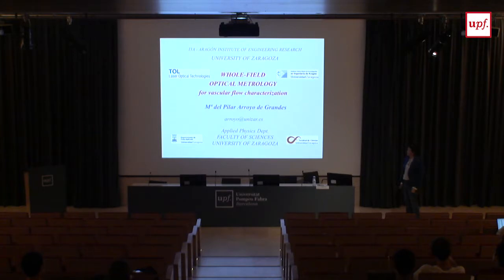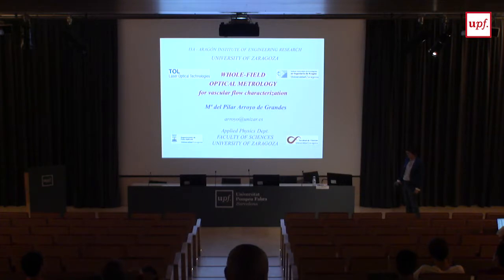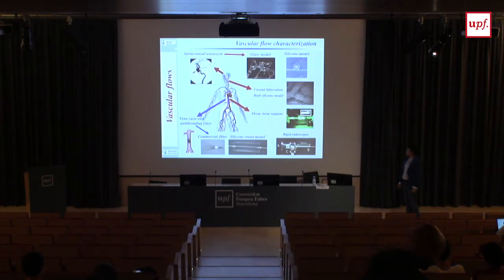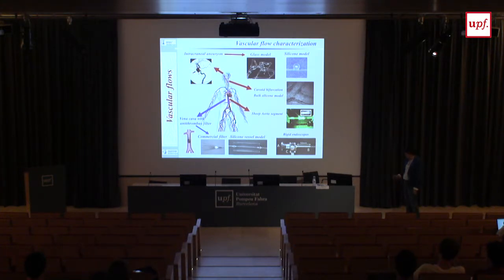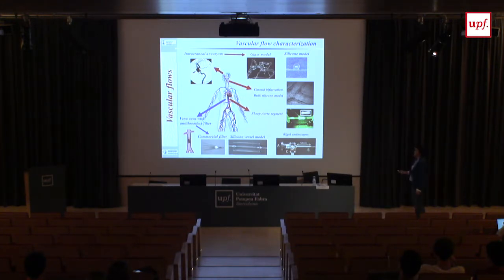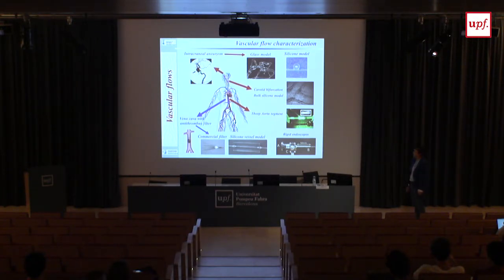Our collaboration came from interaction with groups doing simulation — they wanted data and came to us. Since you are more interested in vascular flow than in optical techniques, I will start with a summary of the kinds of flows we have applied our techniques to. The first one was aneurysms. This is a medical image of what an intracranial aneurysm looks like — it's like a balloon, when the arteries become weak and start growing and finally can explode.